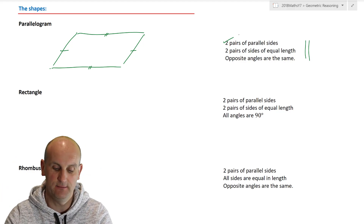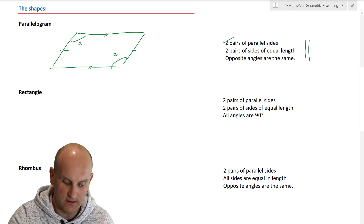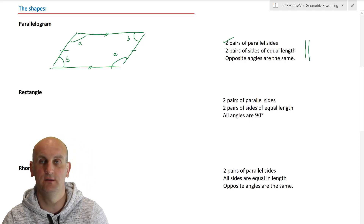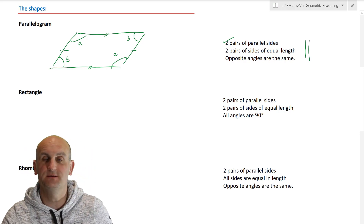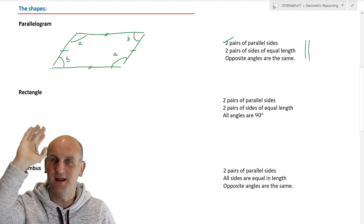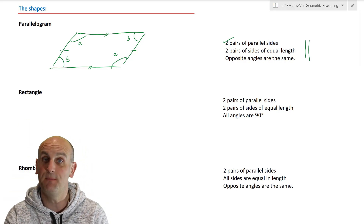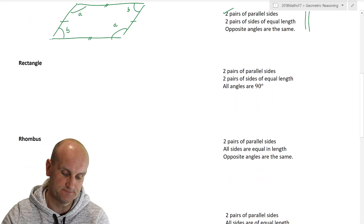And opposite angles are the same. If I call this angle here A, then this angle here is also A. And if I call this angle here B, then that angle is also B. Opposite angles are opposite each other, and so they are the same. That's a parallelogram — please try and remember what that is.